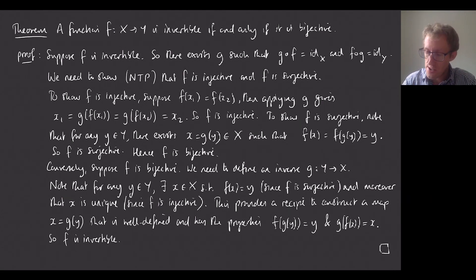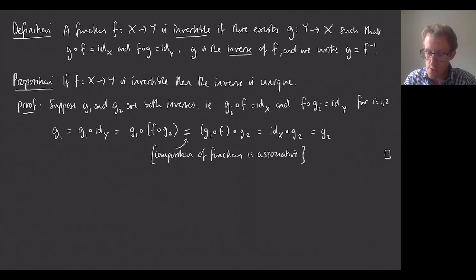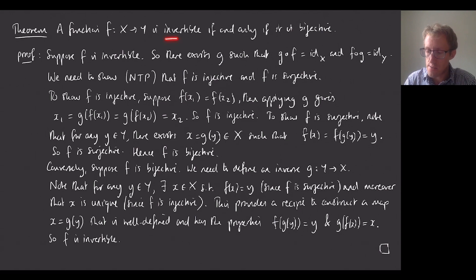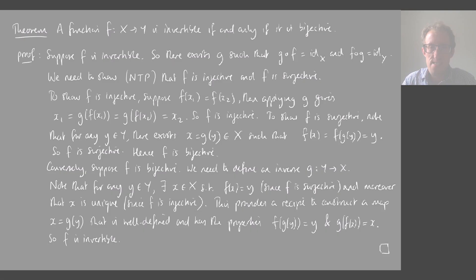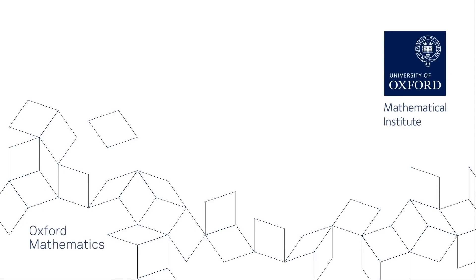To summarize: we gave a nicer definition of cardinality, defined composition of functions, talked about invertibility, showed the inverse must be unique, and showed that being invertible is equivalent to being bijective.